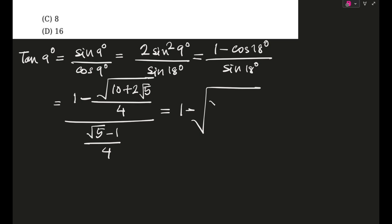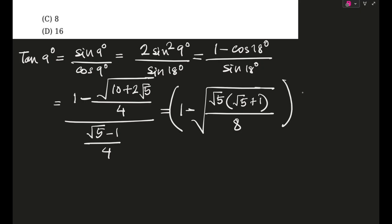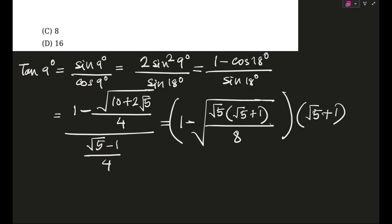This is whole divided by 8, and this will be whole multiplied by (√5 + 1). In our question, k was given to be (√5 + 1), and we have to find the value which was given as m. So m is actually equal to 8.